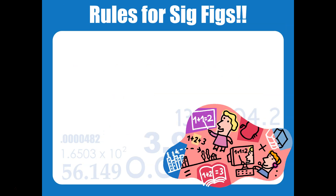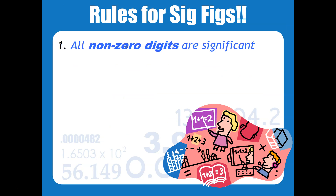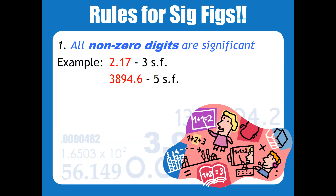Here are some rules for identifying the number of sig figs in a particular number. This first rule is pretty easy: all non-zero digits are significant. So in the example 2.17, nothing's a zero, so therefore there are three sig figs. 3894.6 — every single one of those numbers is not zero, so that's five sig figs.